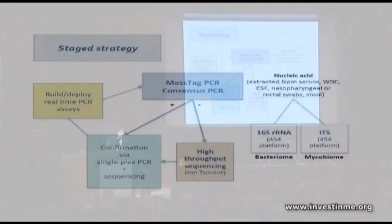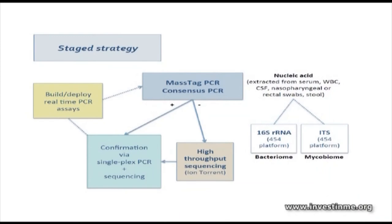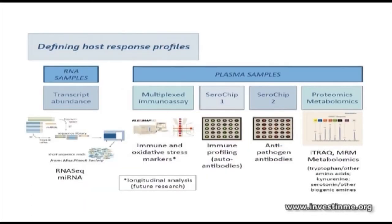Our approach in our search for pathogens is a staged strategy. We typically begin with a mass-tag approach, which looks at a variety of agents selected by our clinician working group as a starting point. We are also doing bacteriome and microbiome work, and with some new collections that we're taking up — starting next week — in a small pilot for the microbiome.